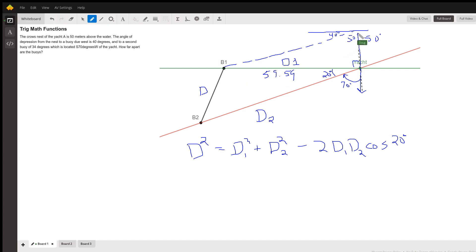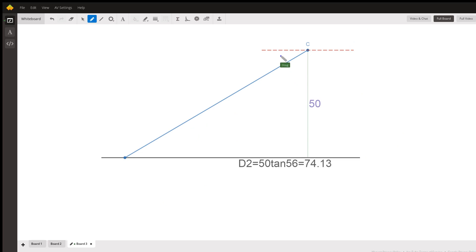And then likewise, if you kind of picture, this is in three dimensions. That angle of depression is 34 degrees. So let's go to the next board. This is 34 degrees, angle of depression to buoy two here. So that this is 56. So the tangent of 56 equals D2 over 50. So D2 equals 50 times the tangent of 56, or about 74.13.